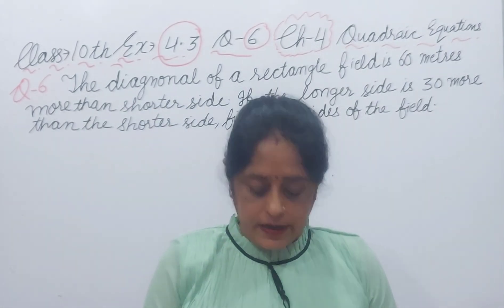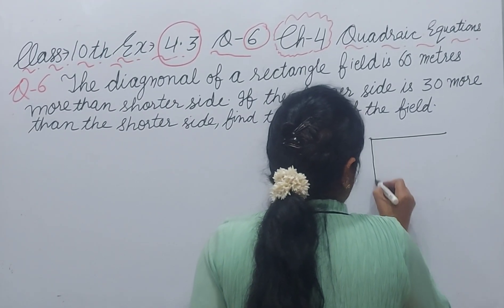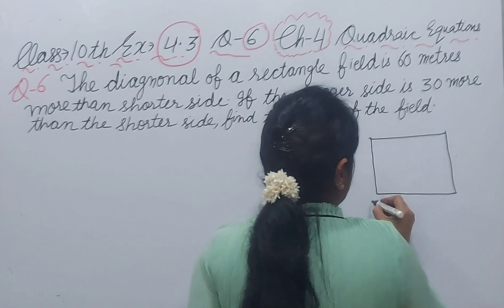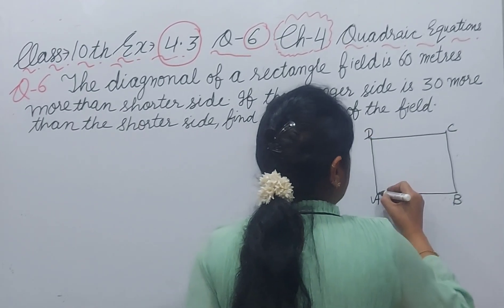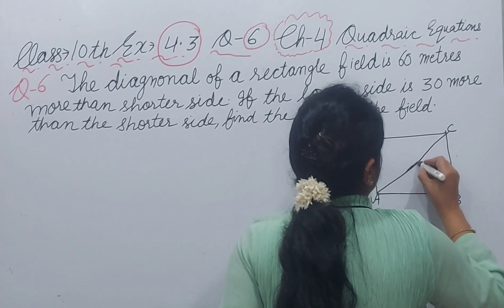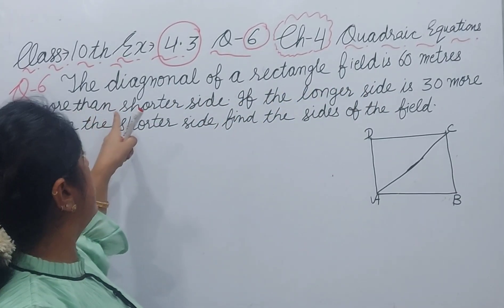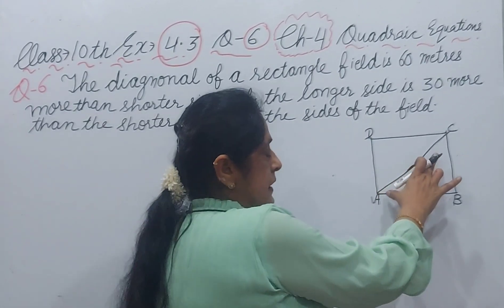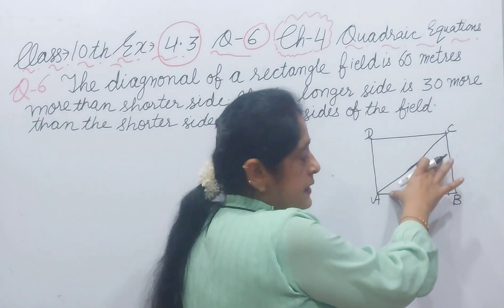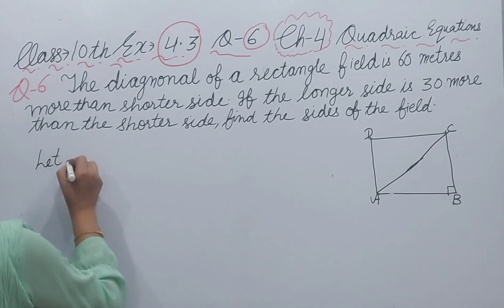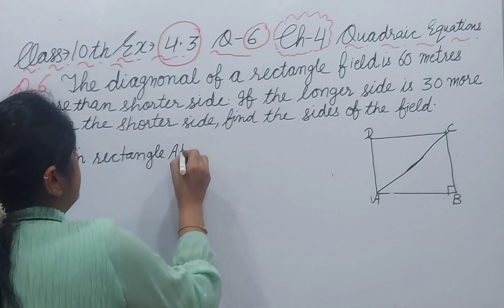First of all, I will draw one figure of a rectangle. Let ABCD is a rectangle and AC is a diagonal. This is a diagonal. The diagonal of a rectangle field is 60 meter more than the shorter side. In this rectangle, each angle is 90 degree and in triangle ABC,